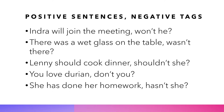Positive sentences have negative tags. For example: 'Indra will join the meeting, won't he?' 'There was a wet glass on the table, wasn't there?' 'Lenny should cook dinner, shouldn't she?' 'You love durian, don't you?' 'She has done her homework, hasn't she?'